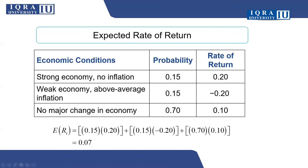Remember that this calculation is quite easy — we take the probability, multiply by the return, and finally you get 0.07, or 7% return. But this return is not the actual return that you will realize from a future investment. This return only indicates that if the economy faces this kind of situation and gives you returns as per your prediction, that is what return you might expect from your investment plan.